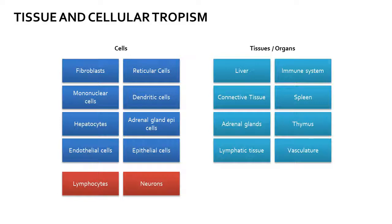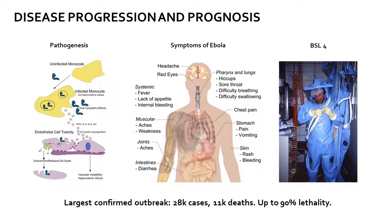The disease progression and prognosis are highly variable patient to patient. Both environmental and genetic factors have been implicated in such variability. Generally, the disease progression is relatively fast and the infection spreads quickly, infecting a broad range of cells.